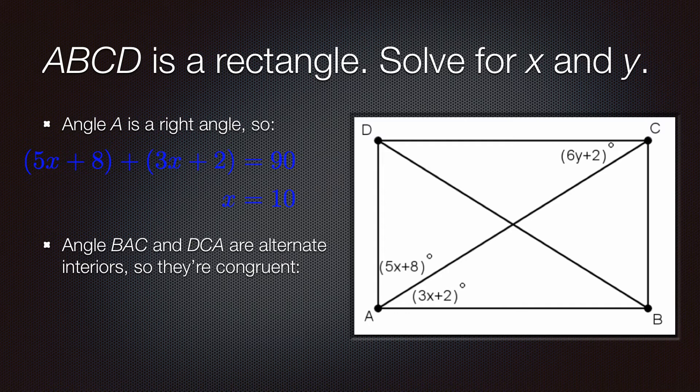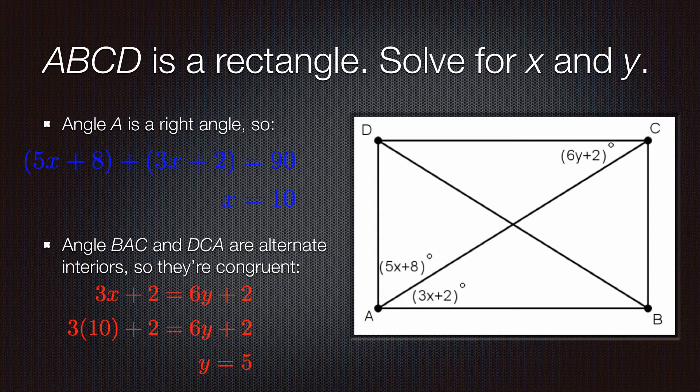Next, we see that BAC and DCA would be alternate interior angles, and so that means those are congruent angles. So, 3x plus 2 equals 6y plus 2. Then, sub in the value of x from the previous problem. So, 3 times 10 plus 2 equals 6y plus 2. So, eventually we get that y must be 5.